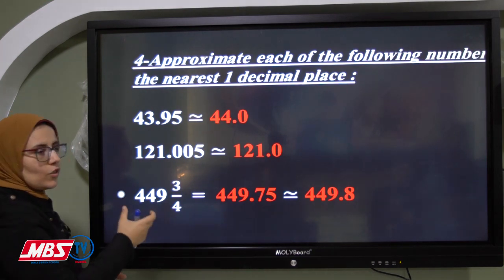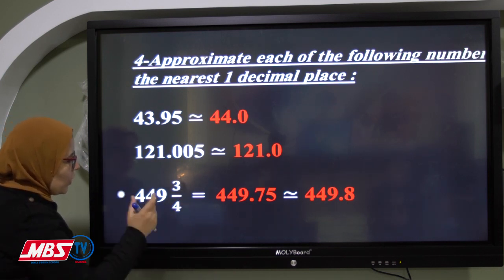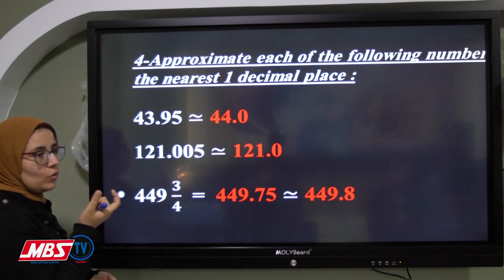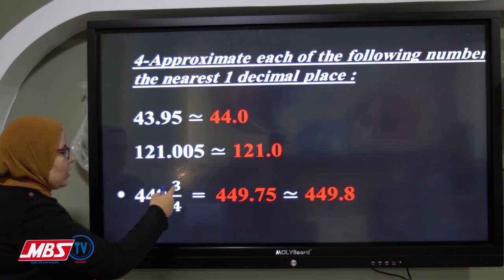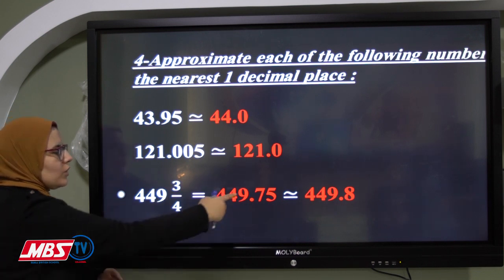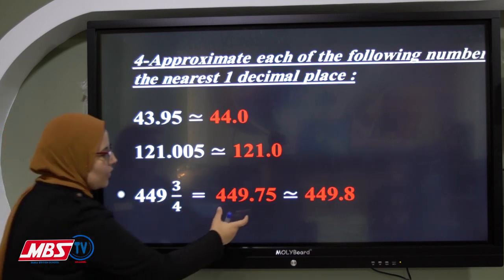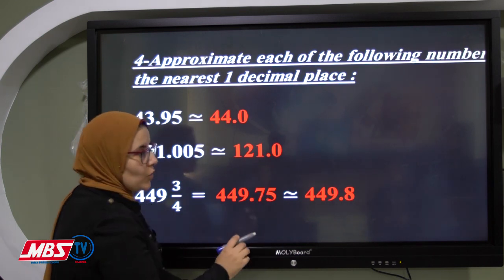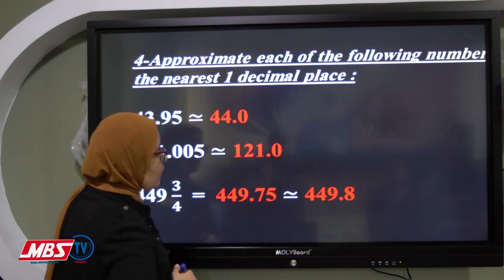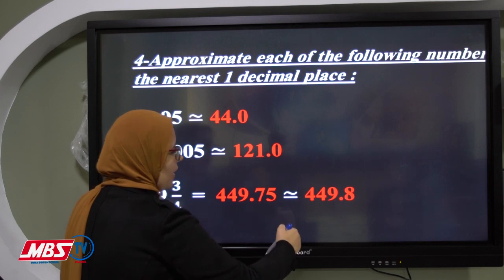For the mixed number 449 and 3/4: we need to convert the fraction to decimal first. Three over 4 becomes 75 over 100 by multiplying by 25, giving 449.75. Now we approximate to the nearest tenth. In the tenth we have 7, and in the hundredths we have 5. Five is rich, so we give 1 to 7 — 7 becomes 8. We write the whole number part as it is. The answer is 449.8.